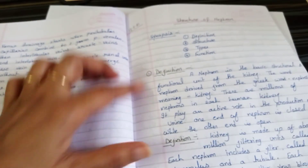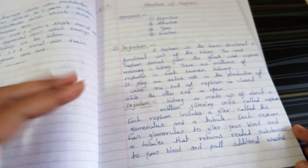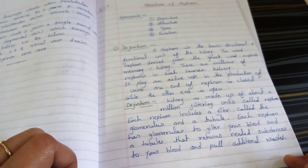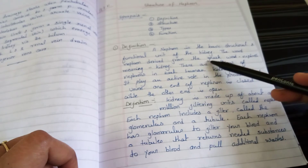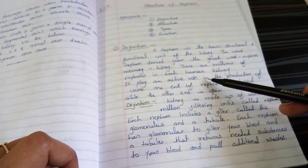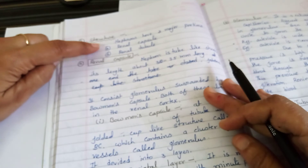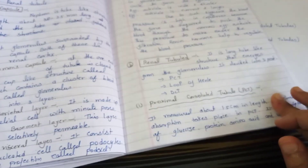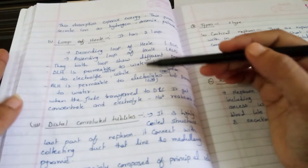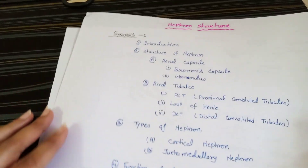I will share the notes link in the description box. You can take a screenshot and write in your notebook. The definition: the nephron is the basic structural and functional unit of the kidney. The word nephron is derived from the Greek word 'nephros' meaning kidney. There are millions of nephrons present in the kidney. The structure has two parts — renal capsule and renal tubule — with PCT, loop of Henle, distal convoluted tubule, and the types and functions covered. Thank you so much.